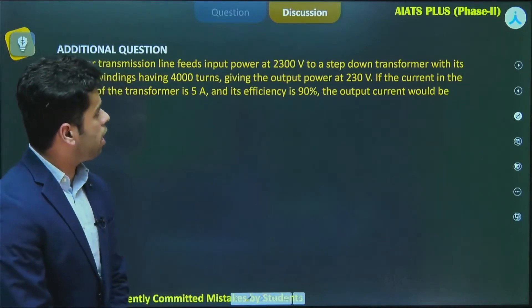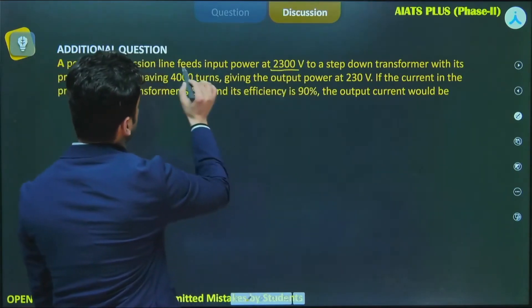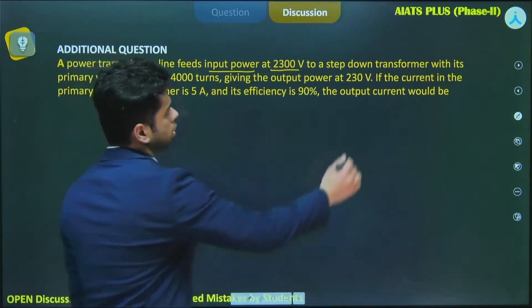A power transmission line feeds input power at 2300 volt to a step down transformer with its primary winding having 4000 turns.